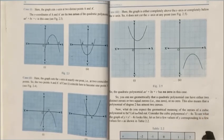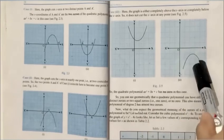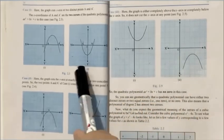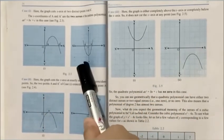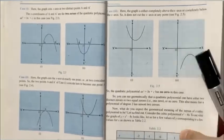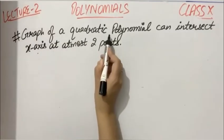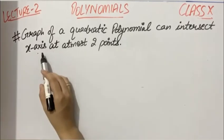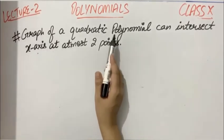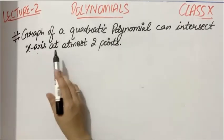So this means that the quadratic polynomial graph may not cut the x-axis at any point. If it does, it will cut at maximum two points. So the result is: the graph of a quadratic polynomial can intersect the x-axis at at most two points.